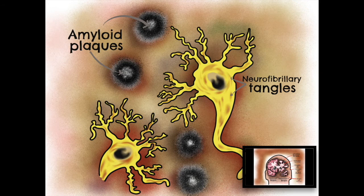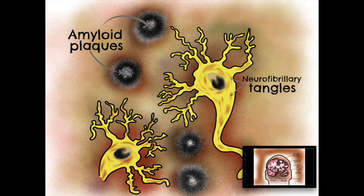Let's now look at some specific changes which take place on the molecular level in brains affected with Alzheimer's disease. The pathological hallmark of Alzheimer's is the accumulation of amyloid beta and tau proteins, and the mechanism underlying this build-up is known as the amyloidogenic pathway. A normal healthy neuron will degrade old amyloid precursor proteins in its membrane and replace them with new ones, and the by-product of this degradation produces harmless soluble peptides.